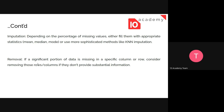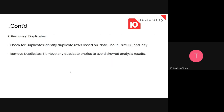Another option is removal: if a significant portion of data is missing in a specific column or row, consider removing those rows or columns if they don't provide substantial information. But be careful — removing rows with empty cells removes all the data in those rows, even if the other features are complete. If the column is small and not substantial, you can remove the entire column.